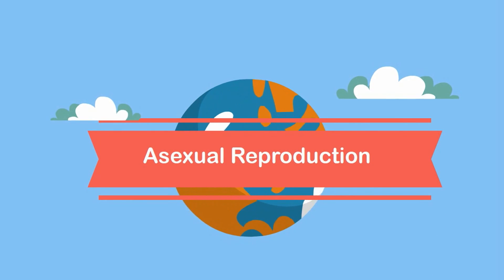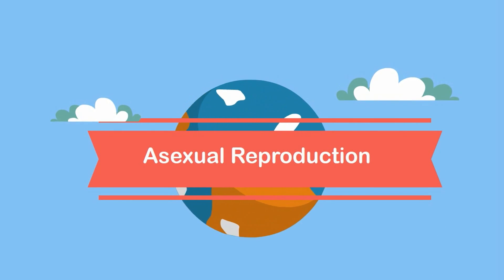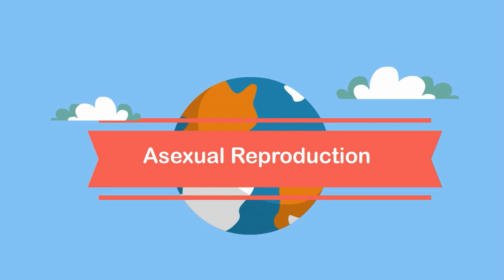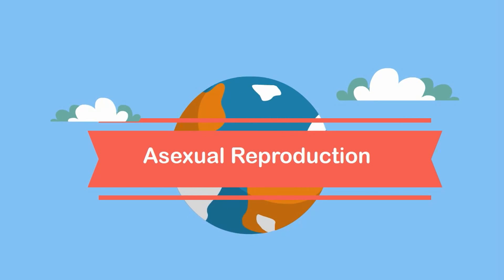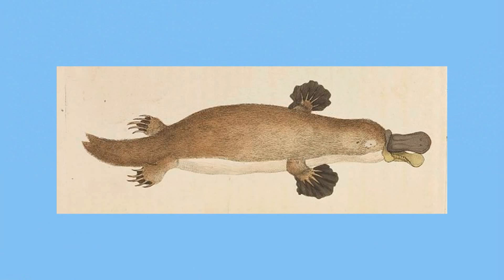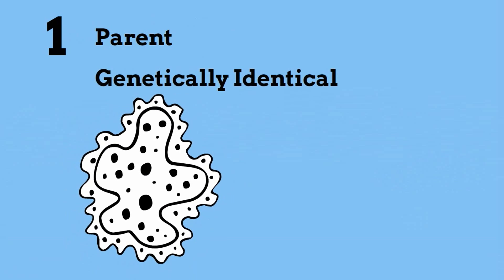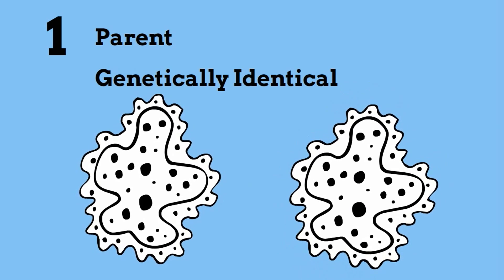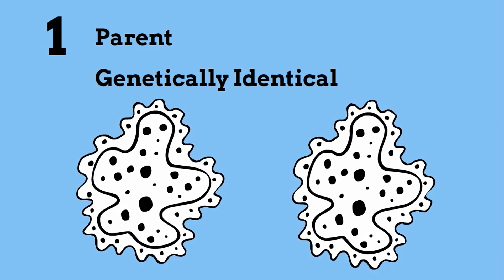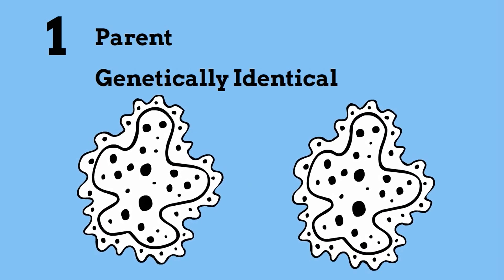Welcome to Moo Moo Math and Science. In this video I would like to talk about asexual reproduction. Many organisms like this platypus reproduce sexually, or with two partners. But other organisms, like bacteria and even multicellular organisms, reproduce asexually. In asexual reproduction you only have one parent and the offspring is genetically identical to the parent. I would like to talk about a couple of the different ways of asexual reproduction.